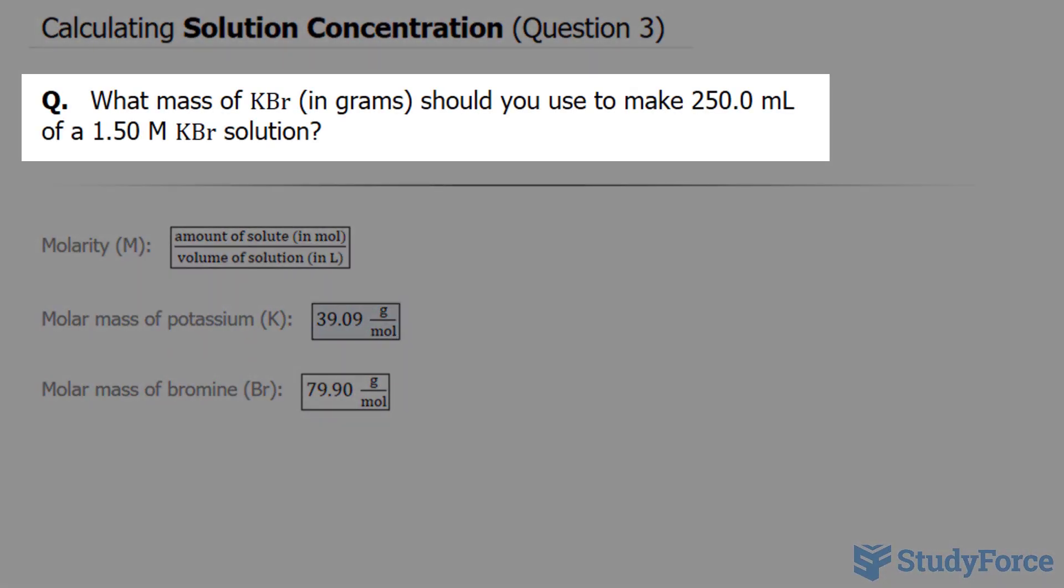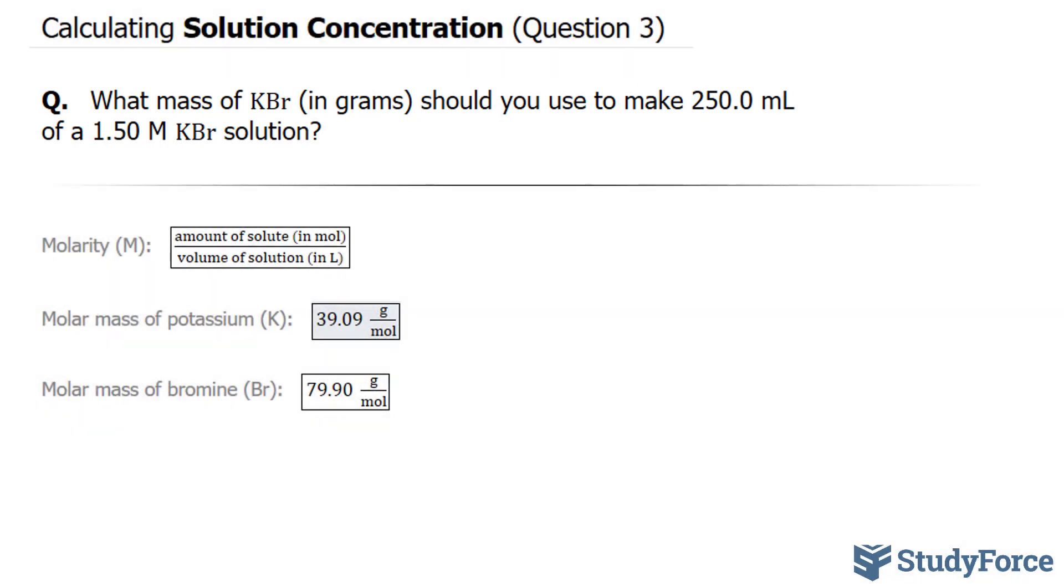In question number three of this series, we're asked what mass of KBr, which is potassium bromide, in grams should you use to make 250 milliliters of 1.50 molar potassium bromide solution. So we're told the molarity, and it's 1.50 molar.